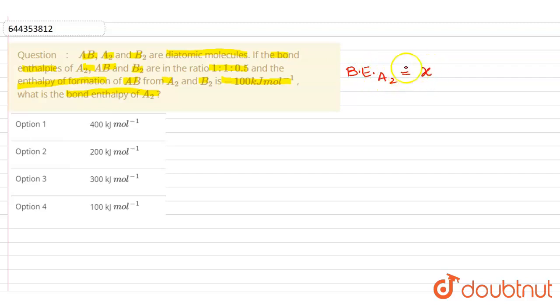Now bond energy or bond enthalpy of AB will also be equal to x, and bond energy or bond enthalpy of B2 will come as x by 2.